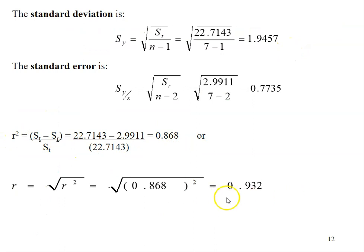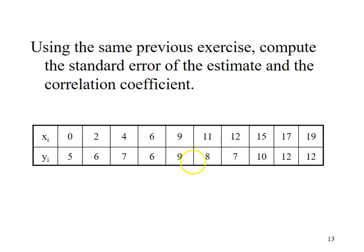The correlation coefficient comes out to 0.932, meaning 86.8% of the uncertainty of the data is represented by the linear regression line. Now, using the same previous exercise from our previous class, I want you to compute the standard error of the estimate syx and the correlation coefficient.